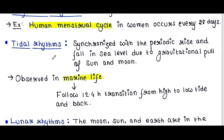Next is tidal rhythms. They are synchronized with the periodic rise and fall in sea level due to the gravitational pull of the sun and moon. These are commonly observed in marine life, which follow the roughly 12.4-hour transition from high to low tide and back.